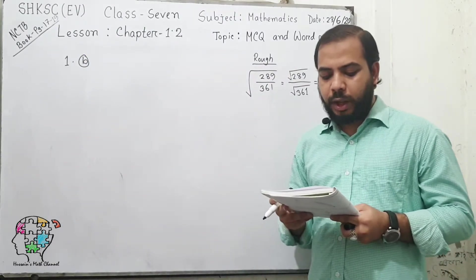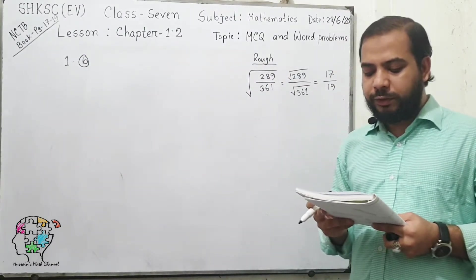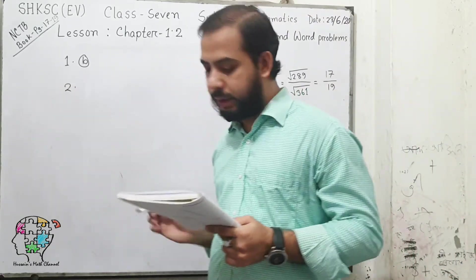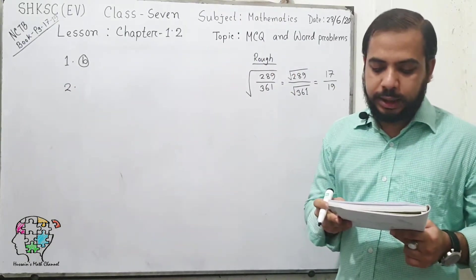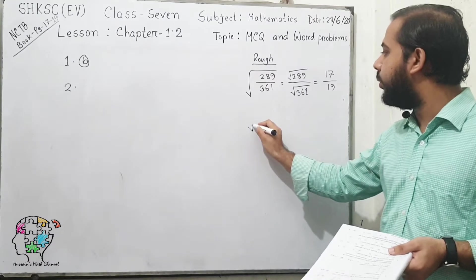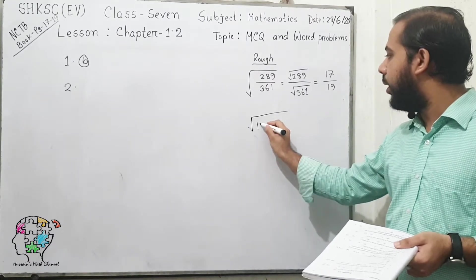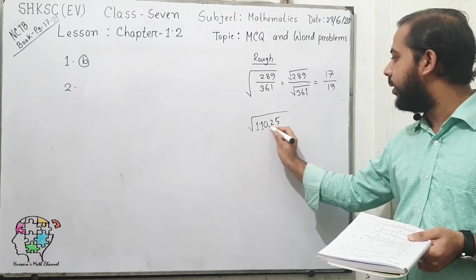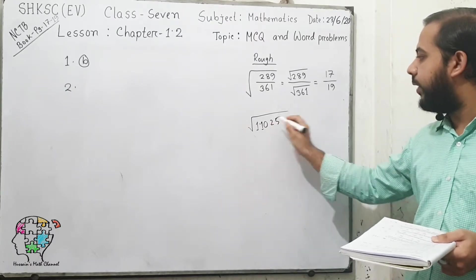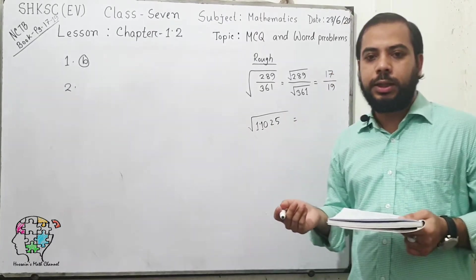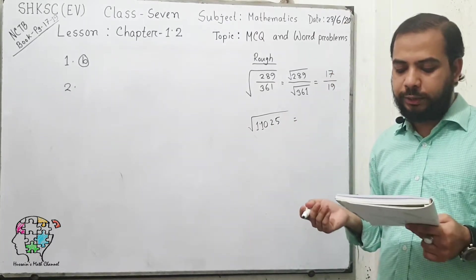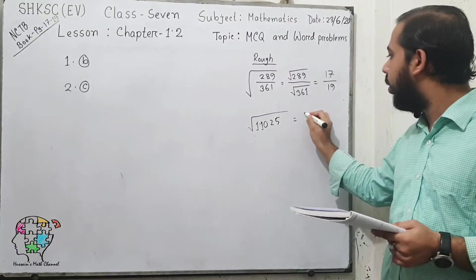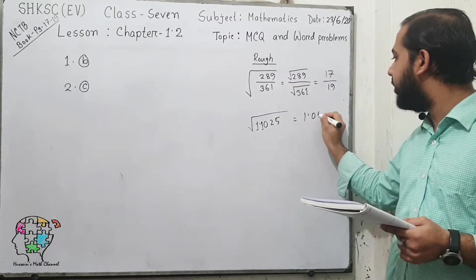Question number 2: which one of the following is the square root of 1.1025? We need to find the square root of this number. If we follow the rules, we can easily find the answer, which will be option C: 1.05.